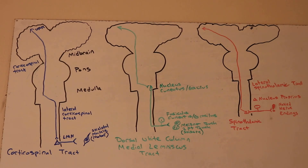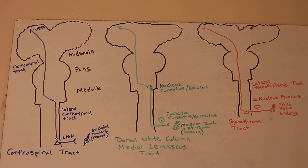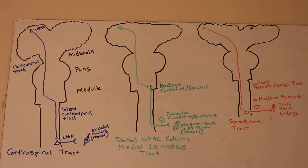Your upper motor neuron starts at your cortex and travels down contralaterally, which means it travels on the opposite side of that which it crosses over. It starts up at the cortex, travels down, and then it decussates — meaning it crosses over. Scientists don't fully understand why neurons and fibers cross over, but we know this upper motor neuron crosses over specifically at the pyramid of the medulla.